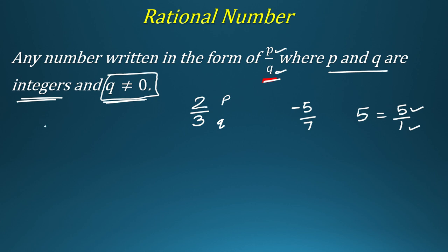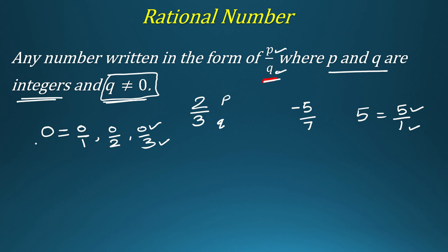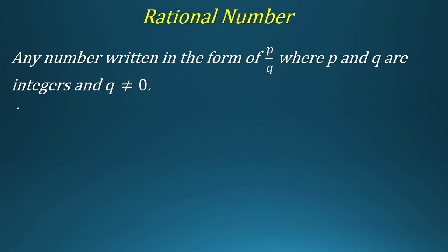Now let's talk about the number 0. Is 0 a rational number? 0 can be written as 0 over 1, or 0 over 2, or 0 over 3 — anything. You see, 0 and 3 are both integers, and the denominator is not 0, so it satisfies the conditions. We can conclude that 0 is also a rational number.